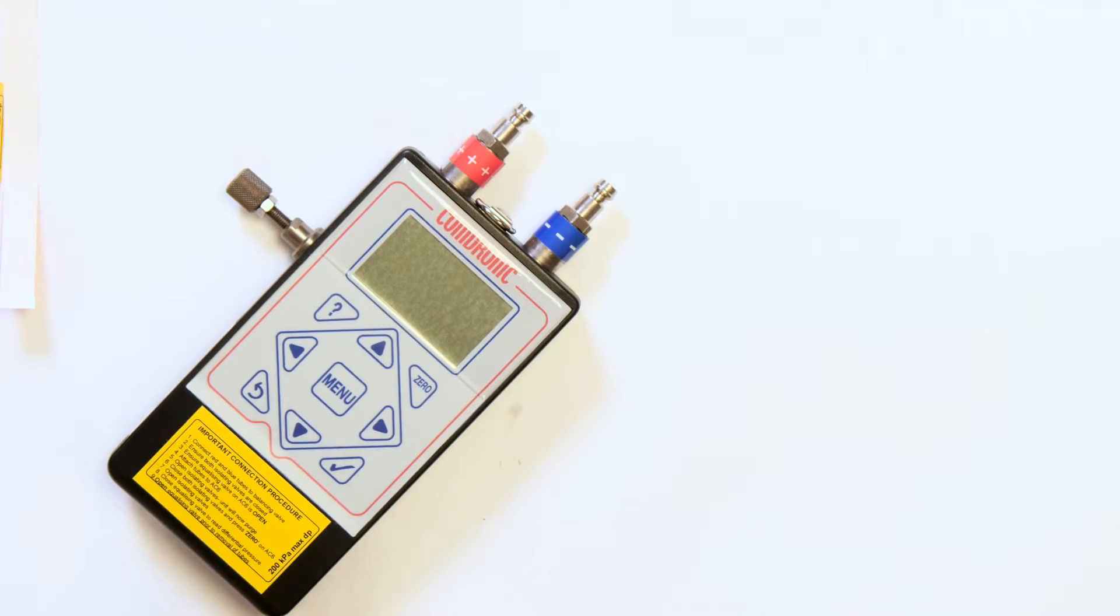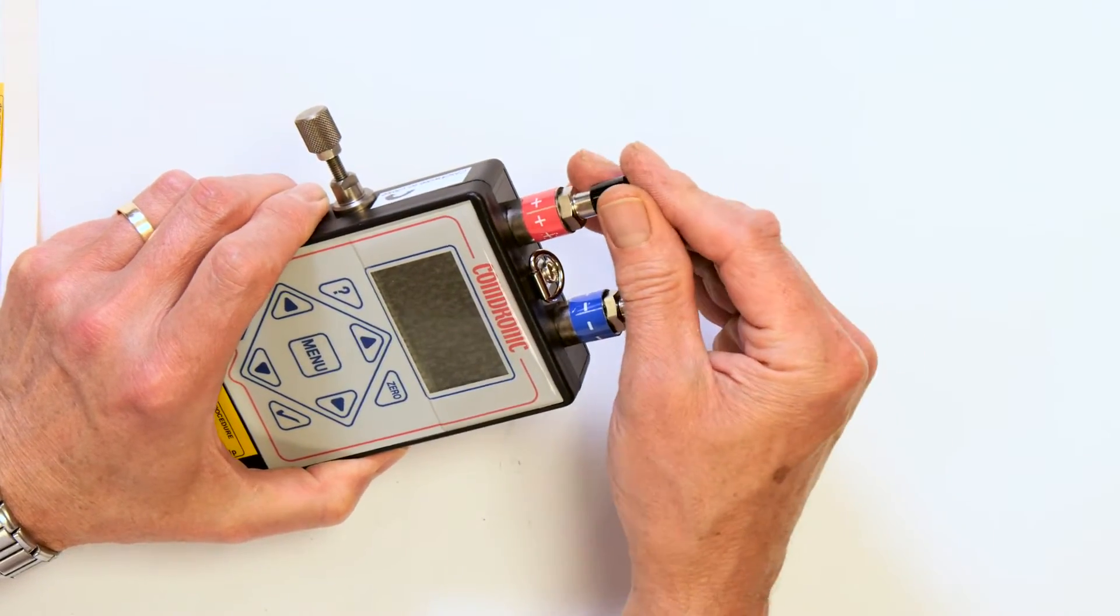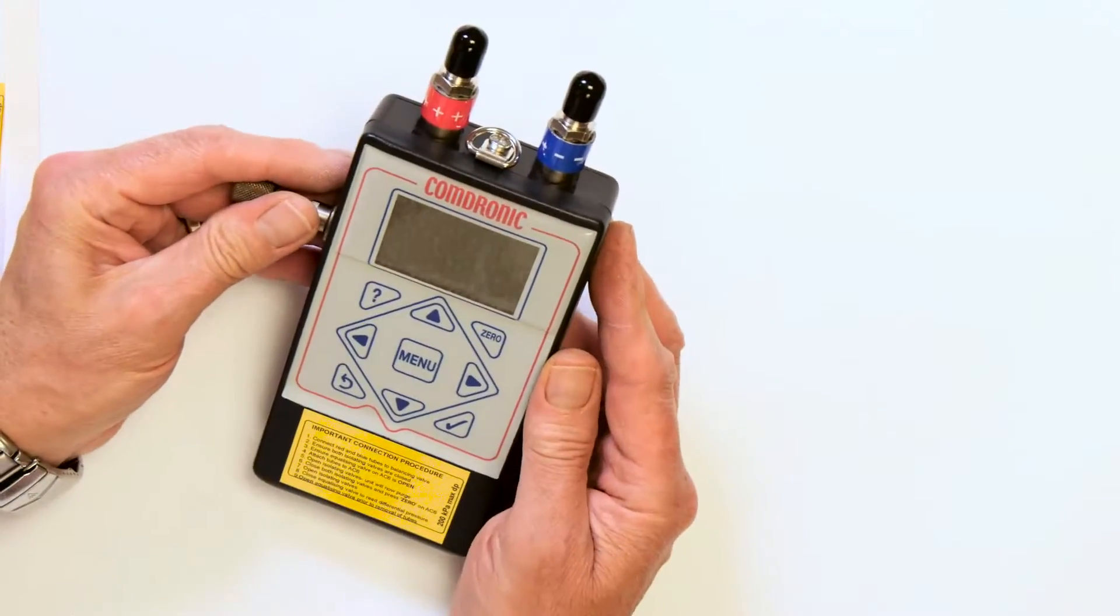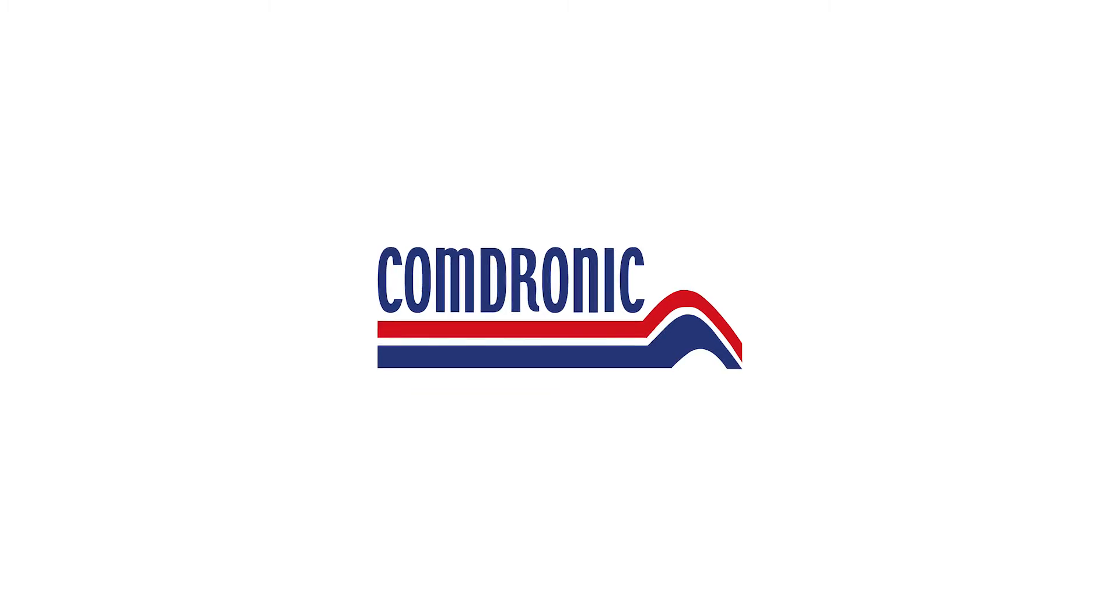And finally, just to prevent any dirt or debris getting into the snap connectors are protective rubber caps. There's the unit fully serviced, relabeled and ready to go back to the customer.